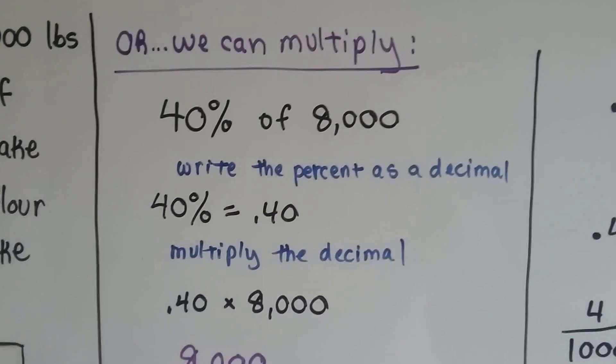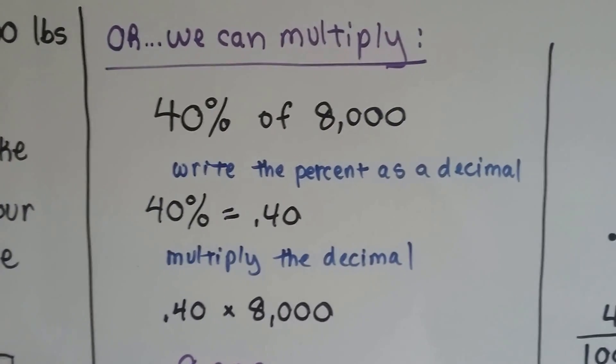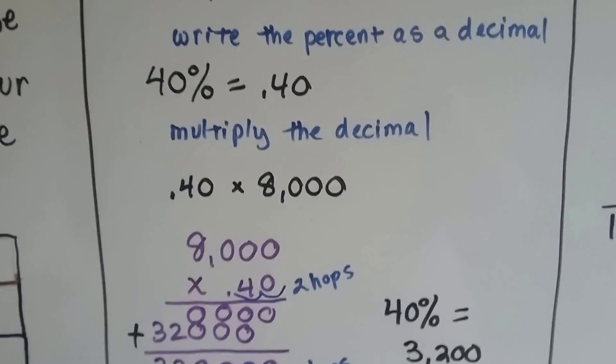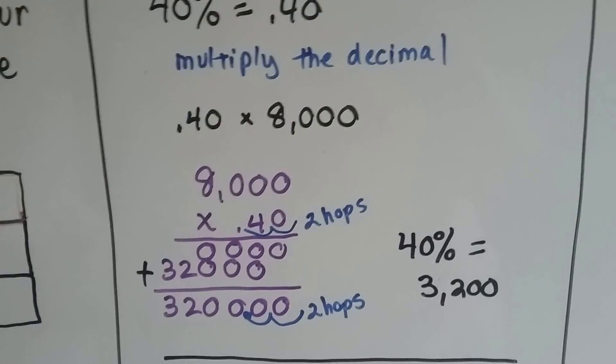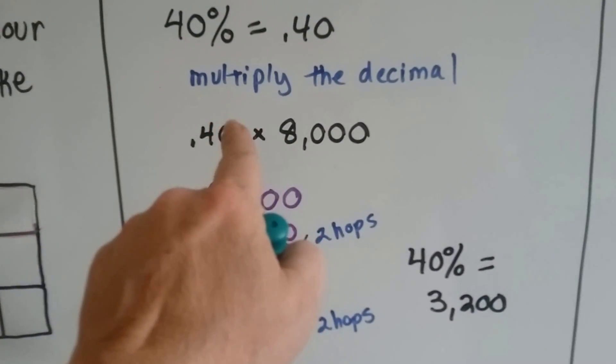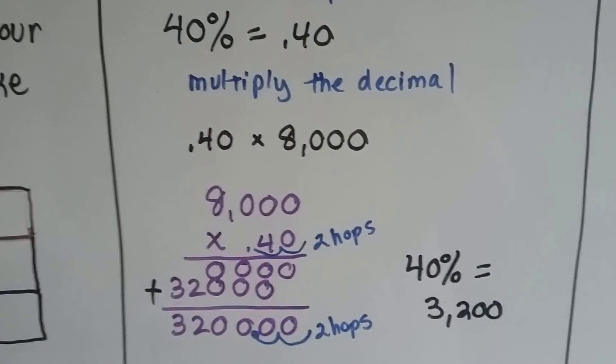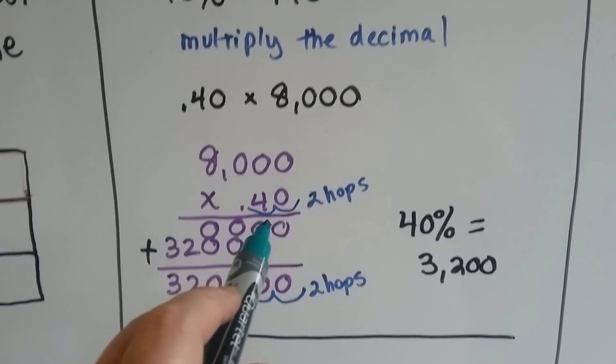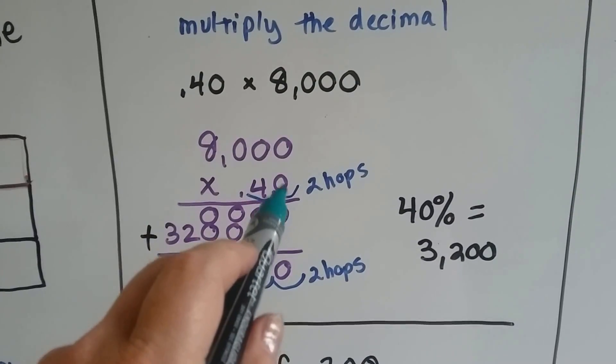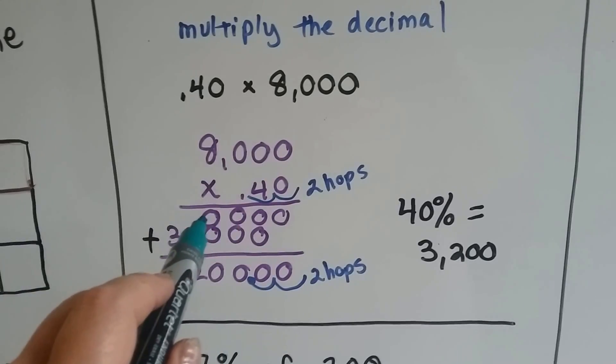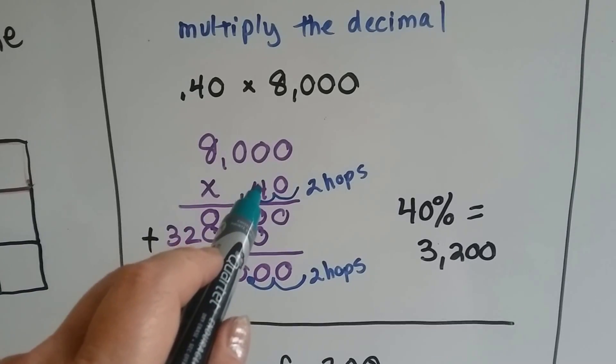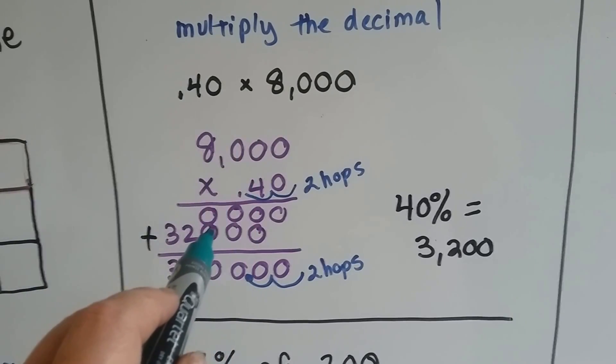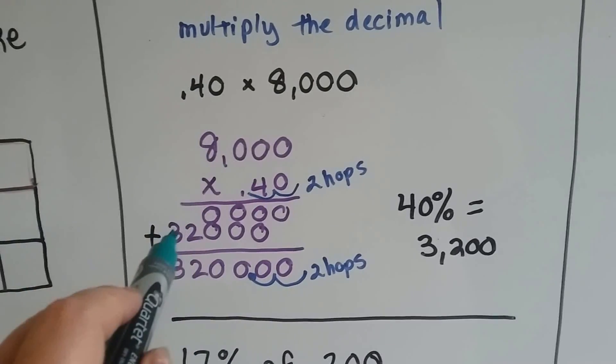Or we could multiply 40% of 8,000 pounds of flour. We write the percent as a decimal. Forty percent equals .40. And then we multiply the decimal. We could even just multiply .40, but let's do it their way. 8,000 times .40. We have zero times all of these, so that gives us four zeros. Now we're in this space. Four times zero is zero. Four times zero is zero. Four times zero is this zero. And now four times eight is 32.